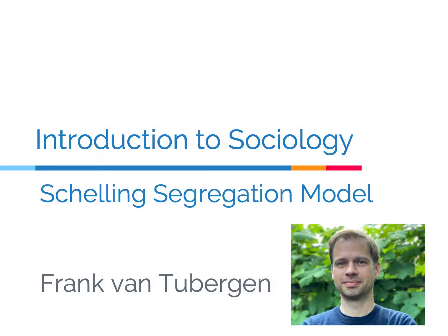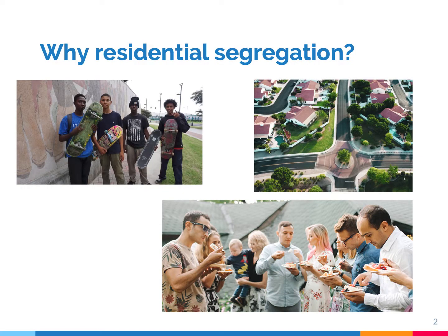Hi, in this lecture I will give an introduction to the famous Schelling segregation model, named after the scholar Thomas Schelling. This model was developed to understand residential segregation. It's well known that ethnic and racial groups live in different neighborhoods, and so this model aims to explain why that is happening.